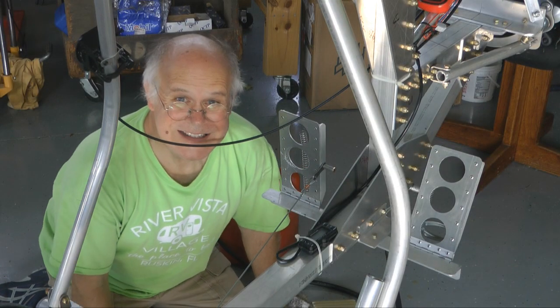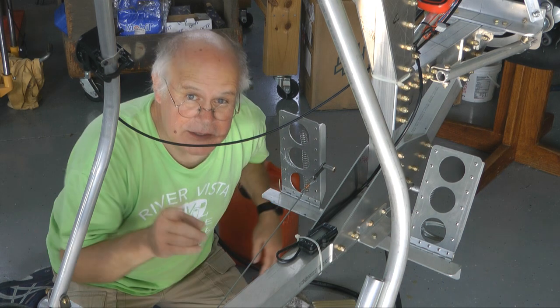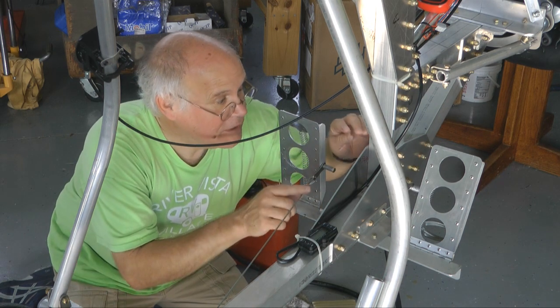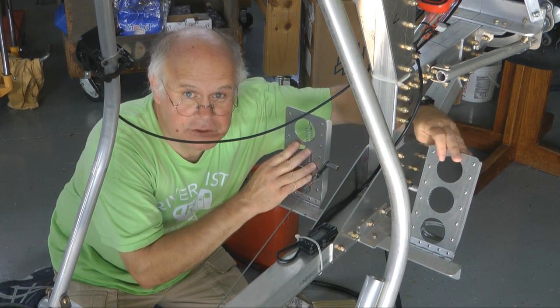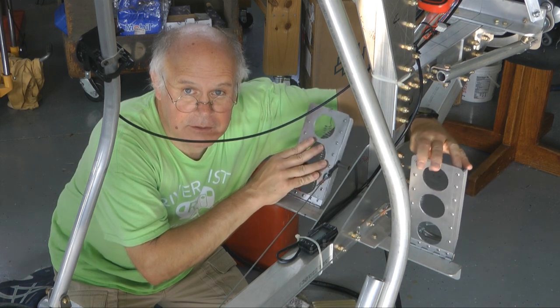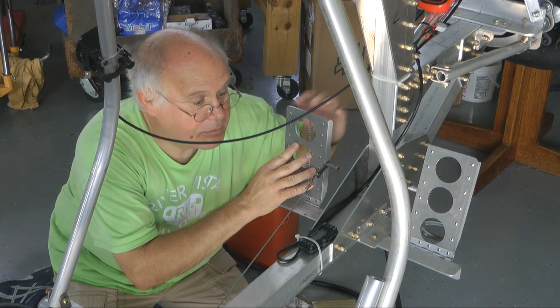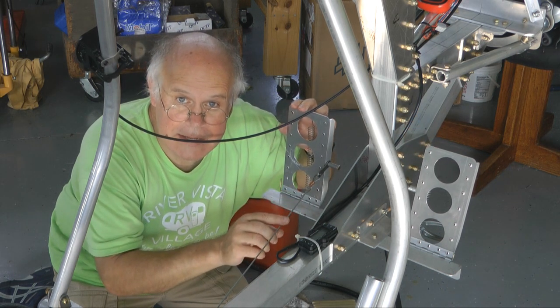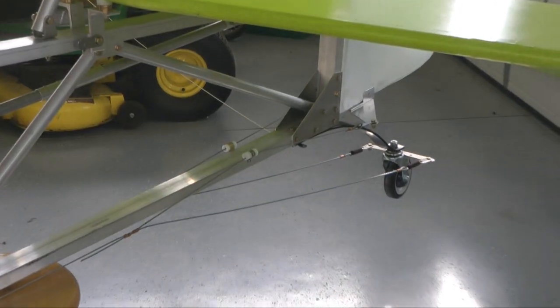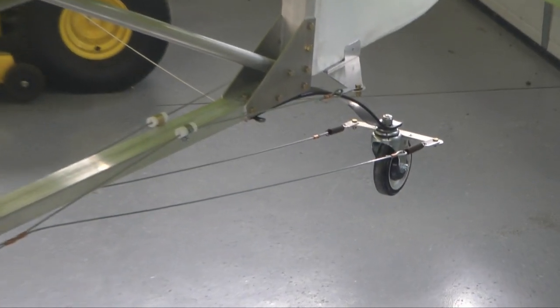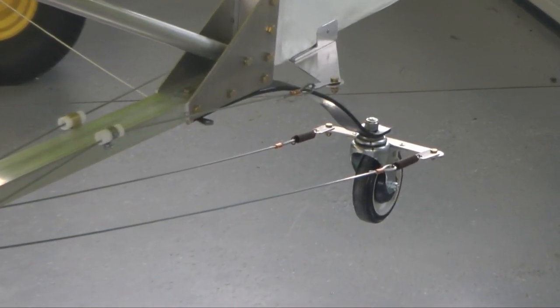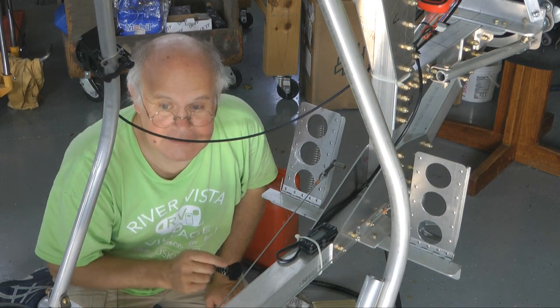And welcome back to building the Affordiplane. In this part we're going to work on putting in our rudder cables, which consists of getting the cabling in place, the guides, the tail wheel, and of course the rudder at the other end. So let's take a look at how we did it.